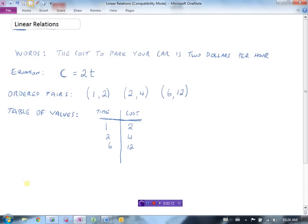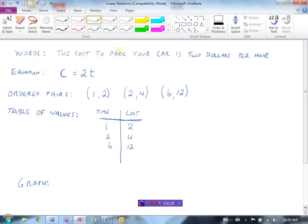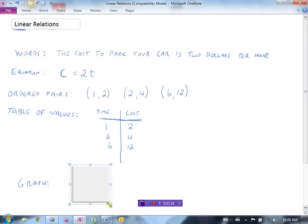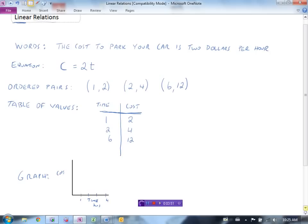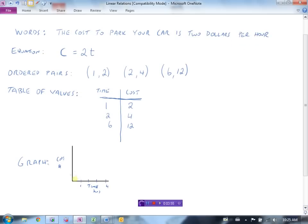And we could also end up putting this thing in a graph. We could do a graph of this data. We would end up putting—we'll talk about this a little bit later, what goes on what axis—but cost will go on this axis and time will go down here. And we would have 1, 2, 3, 4. And the time is in hours. And on this one we have cost in dollars. And I might go up by 2's: 2, 4, 6, 8. So for one hour it will cost you $2. For two hours it will cost you $4. For three hours it will cost you $6. And we could have a graph showing this information here.